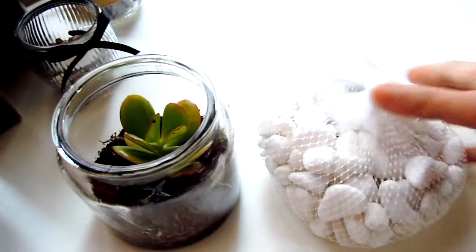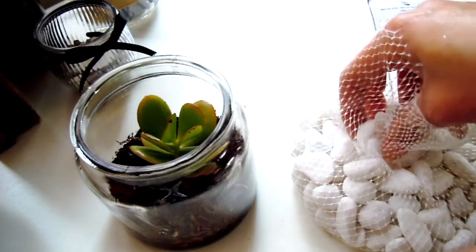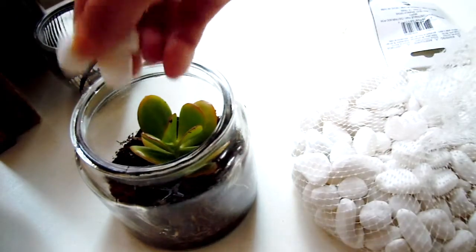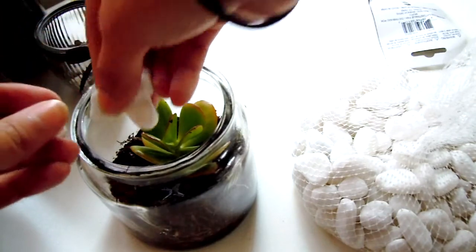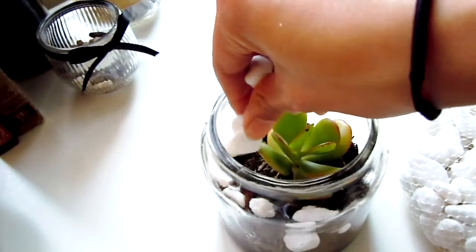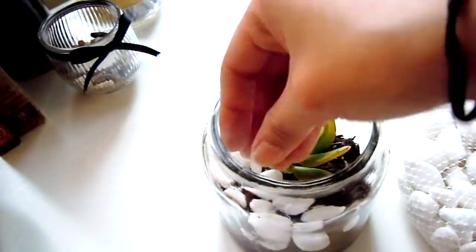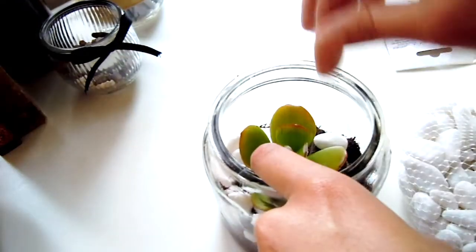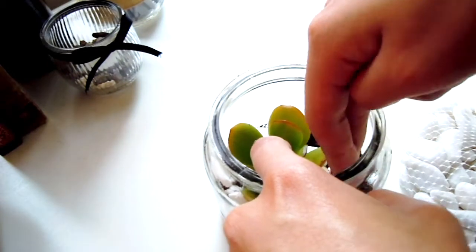Then take your decorative rocks and start placing them around the succulent, making sure not to crush it. Because you don't want to kill it from the first day you have it, because that would be awful. Unless of course you're using a fake succulent, then you can pretty much bang it around and do whatever you want to it. It doesn't really matter.